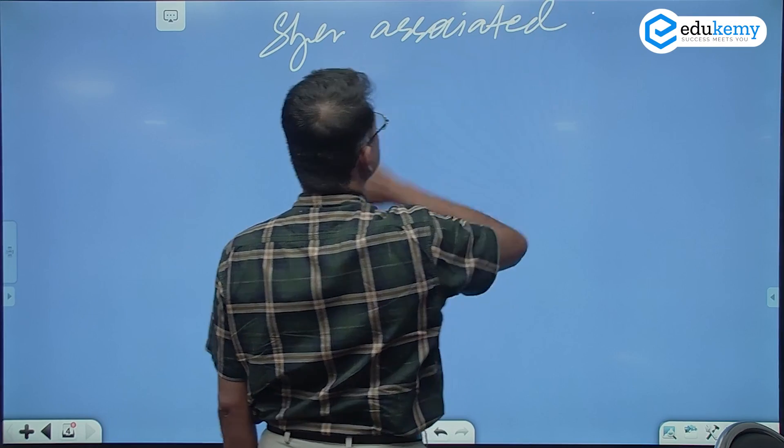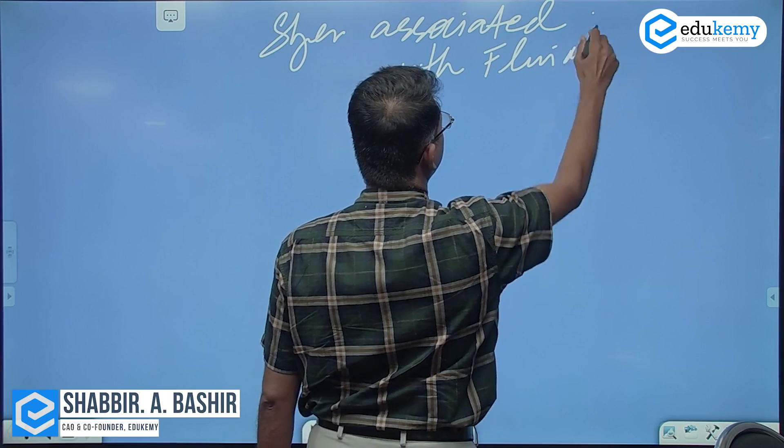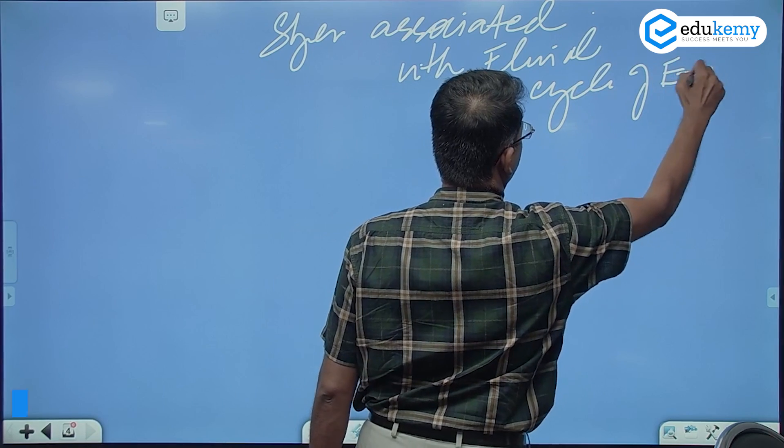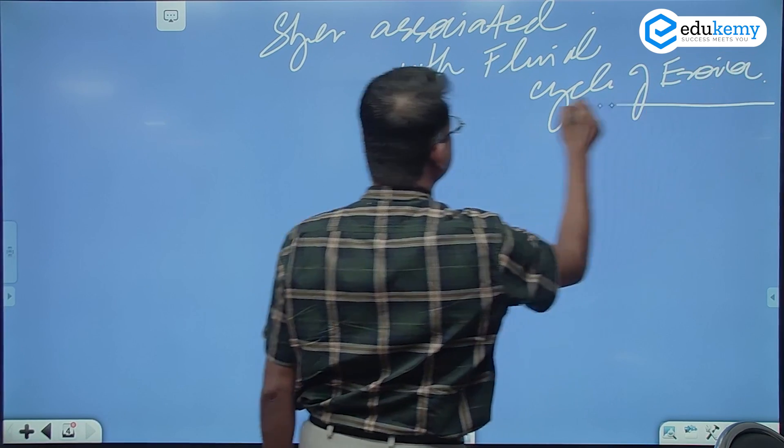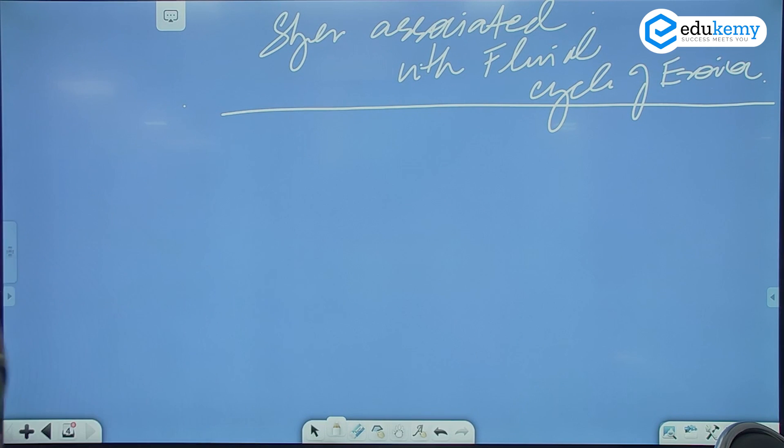The stages associated with the fluvial cycle of erosion, the concept I have discussed. Now let us see how does it tell us how a landform changes. The stages associated with the fluvial cycle of erosion.